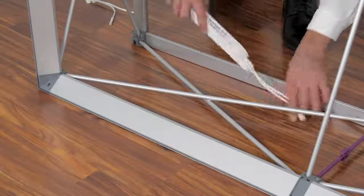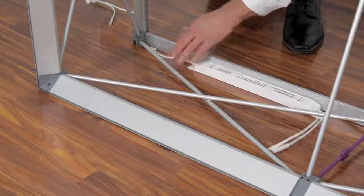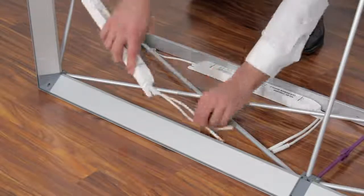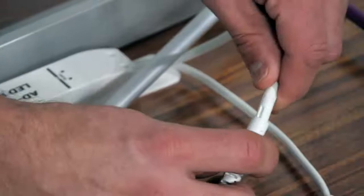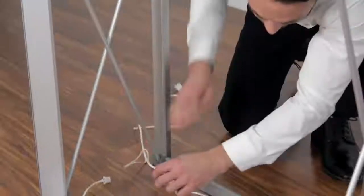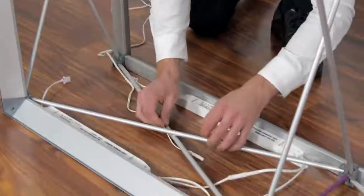For kits with one power supply, first attach the extension cord from the top row of lights to bottom row of lights. Attach the light strip to the power supply. Then attach the power cord to the power supply.